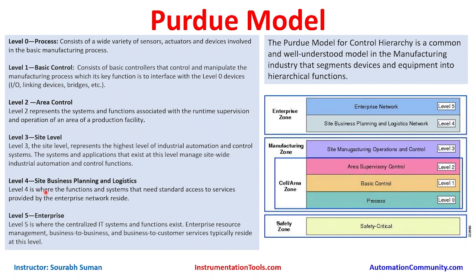Level 4 is site business planning and logistics — where functions and systems that need standard access to services provided by the enterprise network reside. Systems like SAP ERP, production planning, or recipe planning live here. In some manufacturing industries, recipes are created and downloaded to the engineering workstation or directly to the controller. Systems that decide business planning — such as scheduling load at specific times — and which are integrated with the DCS can communicate down to level 2 or level 1.